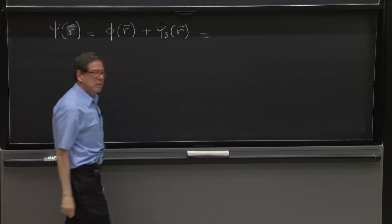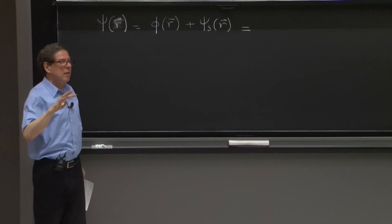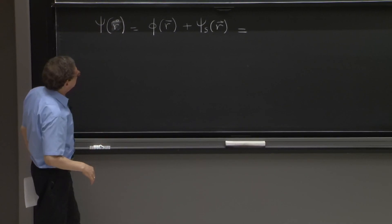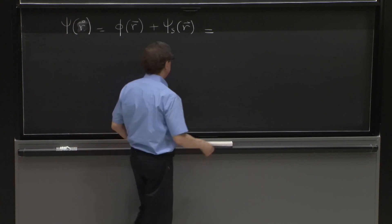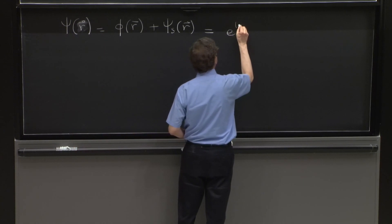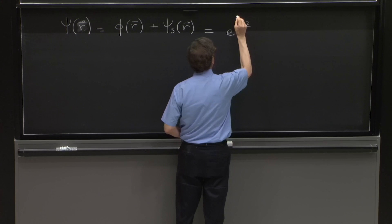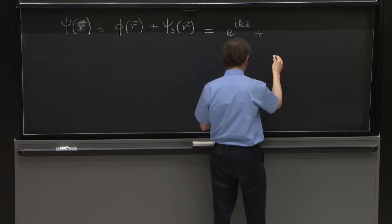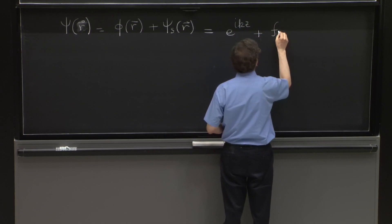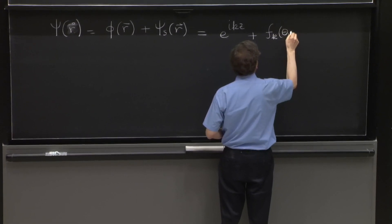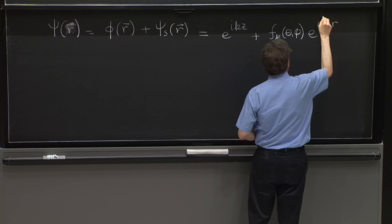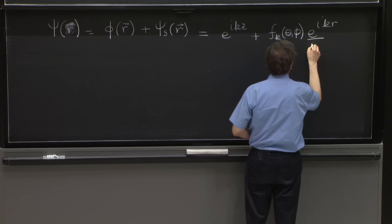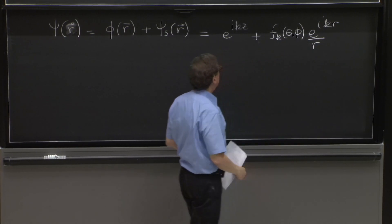So there were two pieces to the solution. We understood that setting up a scattering problem with a central potential, we had a wave that came in, and then we had a spherical wave. And that was an outgoing spherical wave.